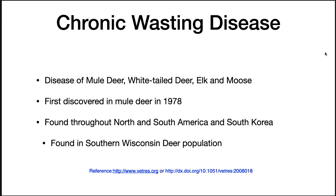So why am I talking about prion diseases? Because one of them is very important to this area of the country, and it's called chronic wasting disease. This is a disease of mule deer, white-tailed deer, elk, and moose. It was first discovered in mule deer in 1978, and now it is found throughout North and South America and South Korea, including the southern Wisconsin deer population.